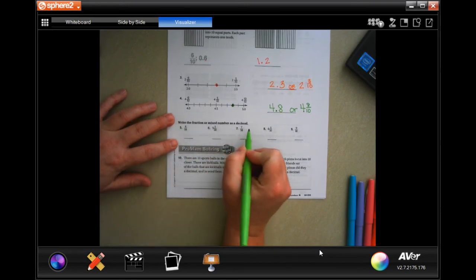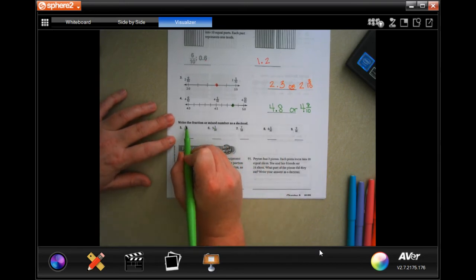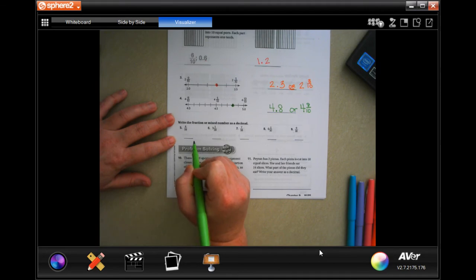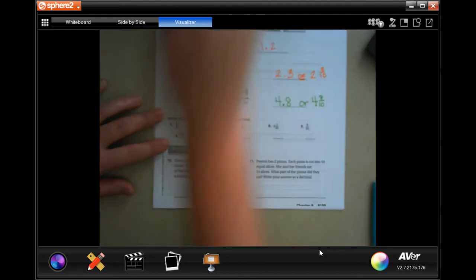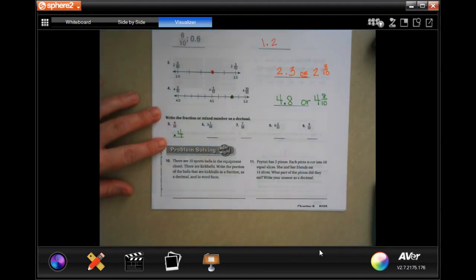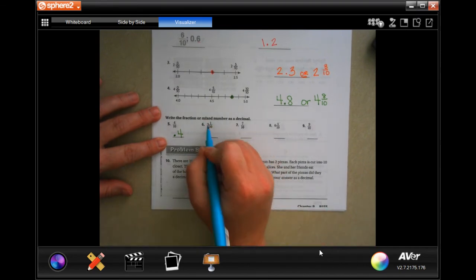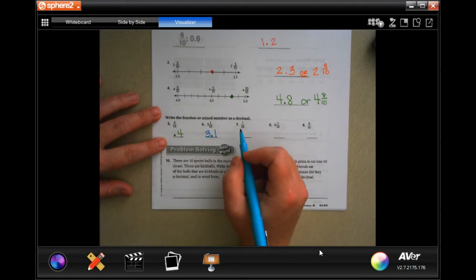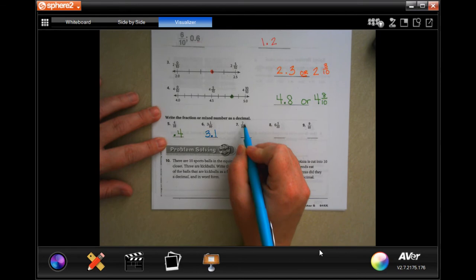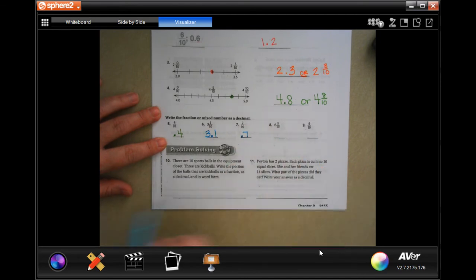All right, so now we are gonna write the fraction or mixed number as a decimal. Well, all we're doing is taking the top number and putting it in the spot right after the decimal. You guys do eight and nine. Number ten says...